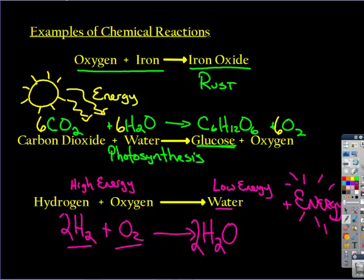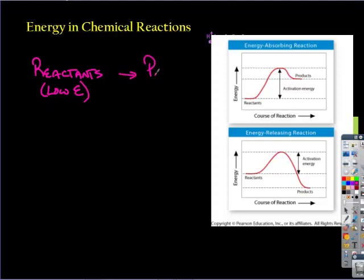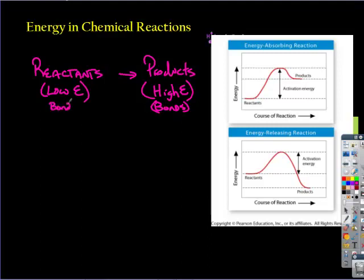Let's talk energy in chemical reactions. In some cases, the reactants are low energy and the products are high energy. If a reaction happens and the molecules are actually absorbing energy, that energy is found within the bonds — they have high bond energy. This graph measures energy on the y-axis and course of reaction on the x-axis. What happens is the amount of energy within the actual chemical compounds is increased.